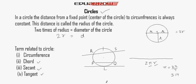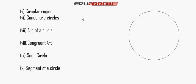The next point is circular region. A region enclosed by a circle is called the circular region. This area is called the circular region, and it is equal to πr² square units.